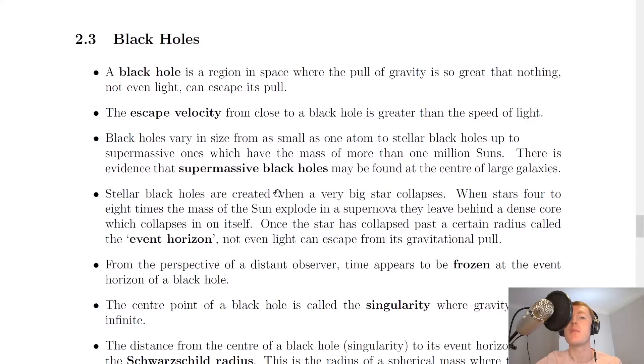Now we're going to start by looking at the definition of a black hole. A black hole is a region in space where the pull of gravity is so great that nothing, not even light, can escape its pull. The escape velocity from close to a black hole is greater than the speed of light. And since nothing can travel faster than the speed of light, then it's not going to be able to escape.